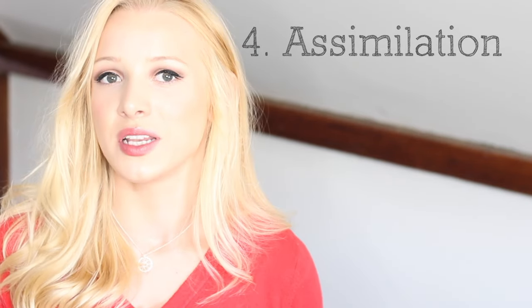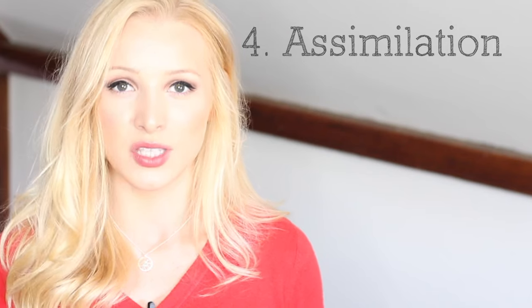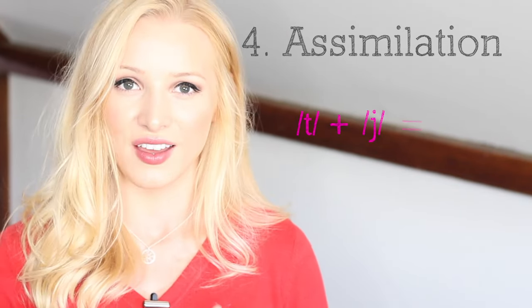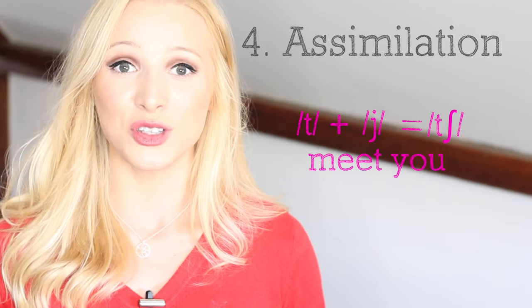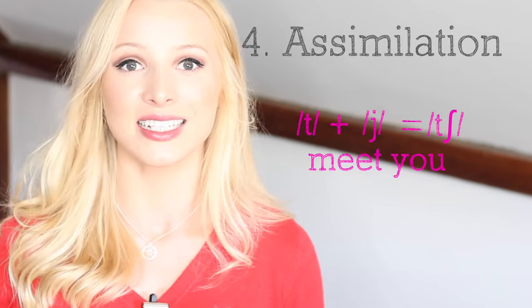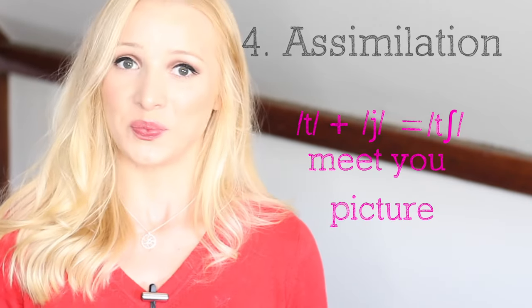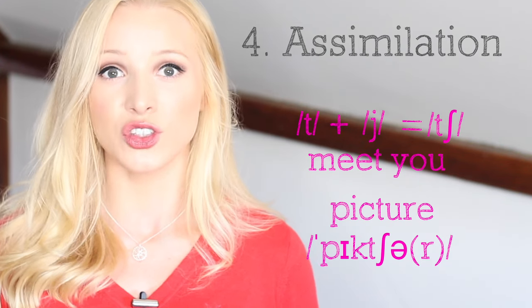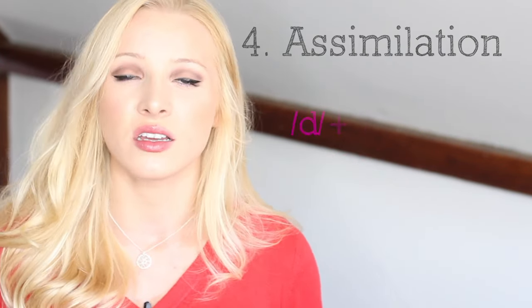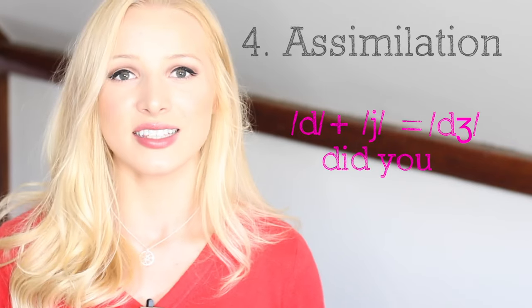Finally, we have number four: assimilation. This is similar to elision, but instead of a phoneme being dropped, two phonemes come together and change into a new phoneme, a new sound. For example, t and y together make a 'ch' sound — when speaking quickly in conversation, I wouldn't say 'I'll meet you there', I'd say 'I'll meetchu there.' It's not just two words coming together either — it can happen in one word like 'picture.' We don't say 'picture'; we say 'picture.' Or instead of 'Tuesday', we say 'Tuesday.' Another example is d and y — d and y together make a 'dj' sound. Instead of saying 'did you', I say 'didju.'